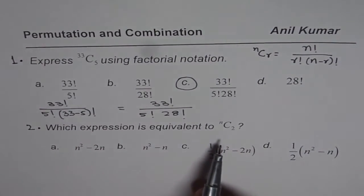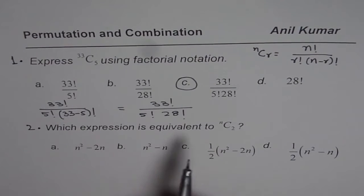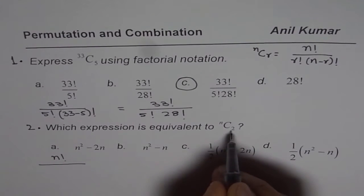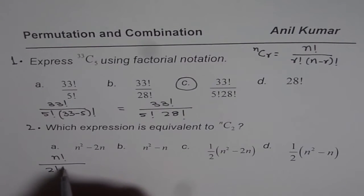Now let's look into the second part which is kind of related. Which expression is equivalent to Nc2? We will apply the same formula. Nc2 really means n factorial divided by 2 factorial times n minus 2 factorial.